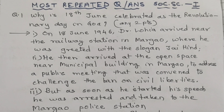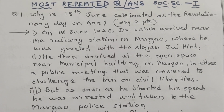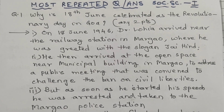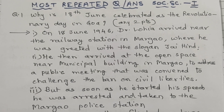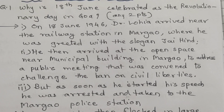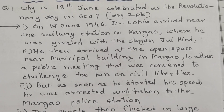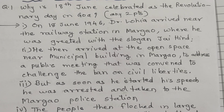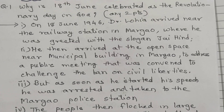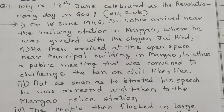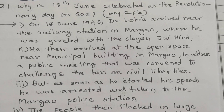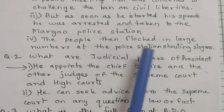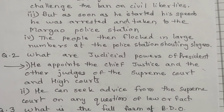First: on 18th June 1946, Dr. Lohia arrived near the railway station in Margao, where he was greeted with the slogan 'Jai Hind.' He then arrived at an open space near the Municipal Building in Margao to address a public meeting convened to challenge the ban on civil liberty. But as soon as he started his speech, he was arrested and taken to the Margao police station. The people then flocked in large numbers at the police station, shouting slogans.